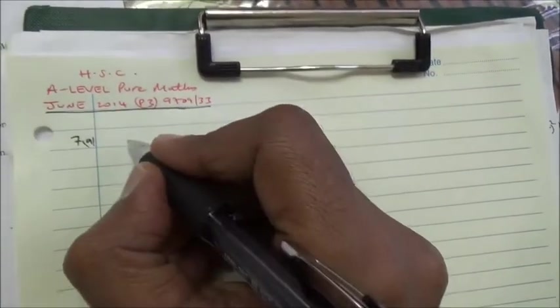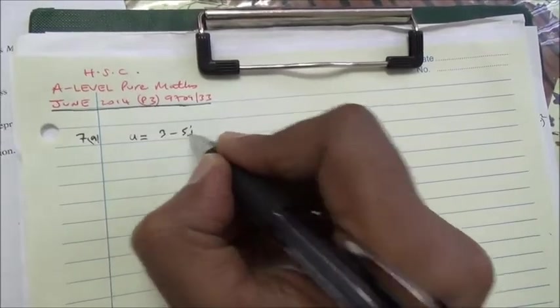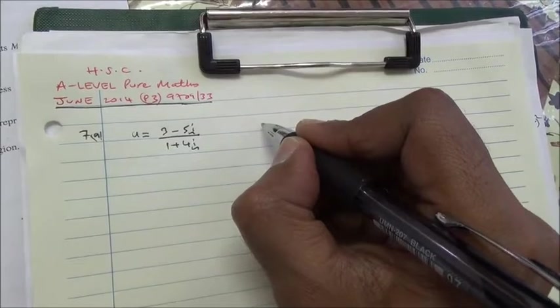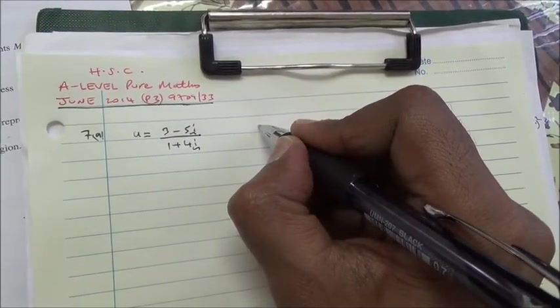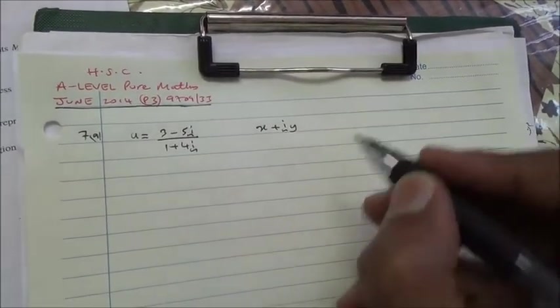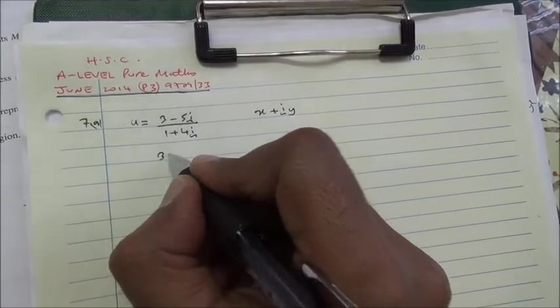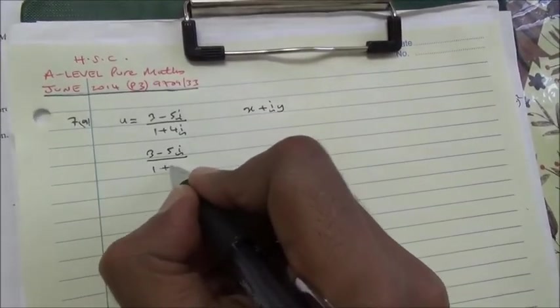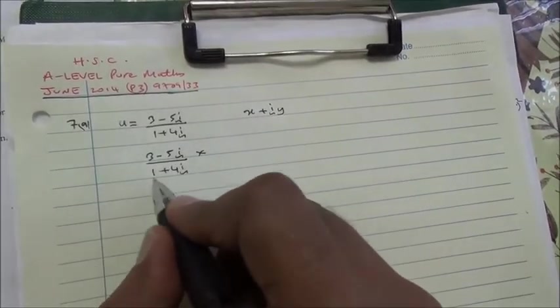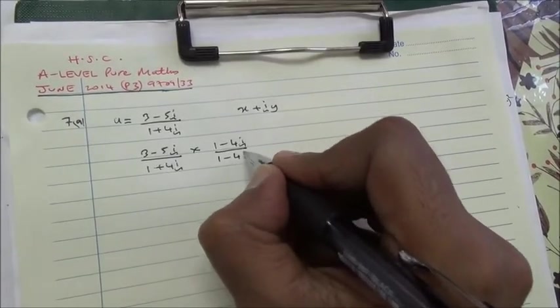Here, we have u equals 3 minus 5i over 1 plus 4i. This needs to be expressed in the form of x plus iy, where x and y are real. Now, 3 minus 5i divided by 1 plus 4i multiplied by the conjugate of the denominator. So, this is 1 minus 4i divided by 1 minus 4i.